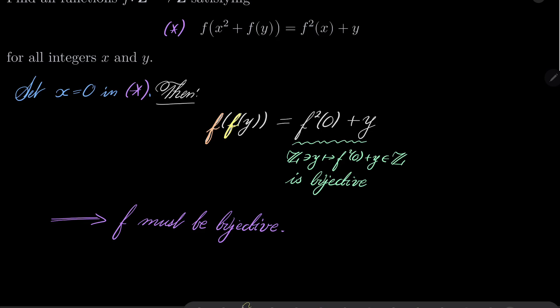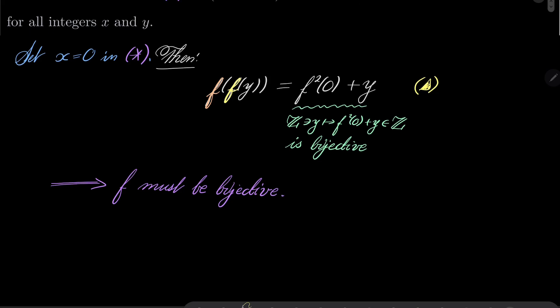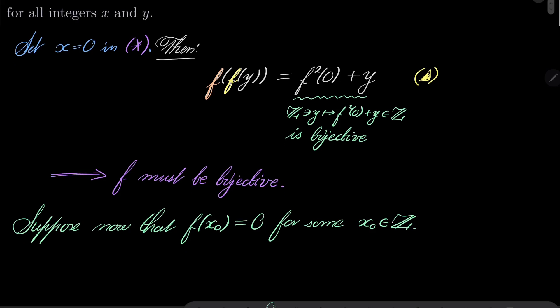And also, let's call this condition, which we have derived, triangle. Now, suppose that f of x0 equals 0 for some integer x0. For sure, such a number exists because our function is bijective.